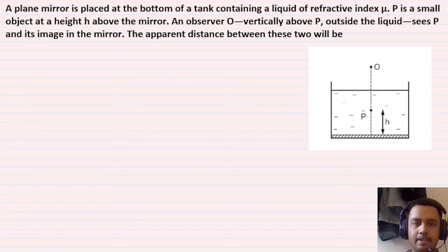This plane mirror is placed at the bottom. P is a small object at height h above the mirror, shown in the diagram. An observer O is vertically above P, outside the liquid, and sees P and its image in the mirror.